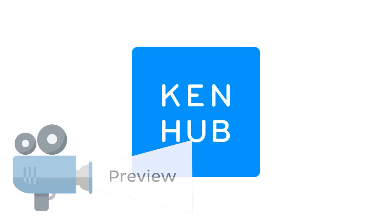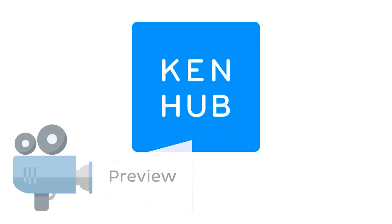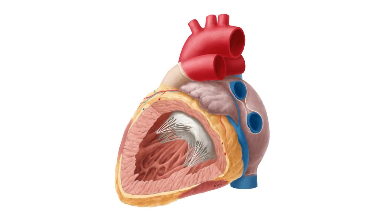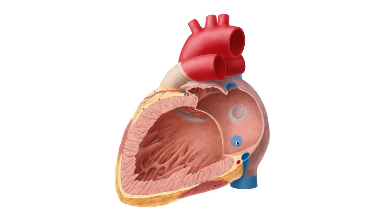Hello everyone, this is João from KenHub and welcome to another anatomy tutorial where this time we're going to be talking about the left atrium and ventricle. Another topic of the heart where we're going to essentially explore this image that you see now on your screen. This is an image of the left lateral view of your heart where we just cut open here the left ventricle and expose the left atrium, covering all the important structures related to both.